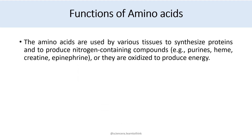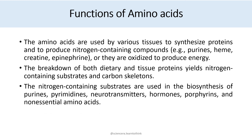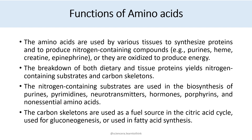Amino acids are used by various tissues to synthesize proteins and to produce nitrogen-containing compounds like purines, heme, creatine, and epinephrine, or they are oxidized to produce energy. The breakdown of both dietary and tissue proteins yields nitrogen-containing substrates and carbon skeletons. The nitrogen-containing substrates are used in biosynthesis of proteins, pyrimidines, neurotransmitters, hormones, porphyrins, and non-essential amino acids. The carbon skeletons are used as fuel in the citric acid cycle, for gluconeogenesis, or for fatty acid synthesis.